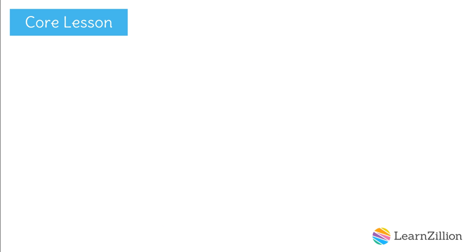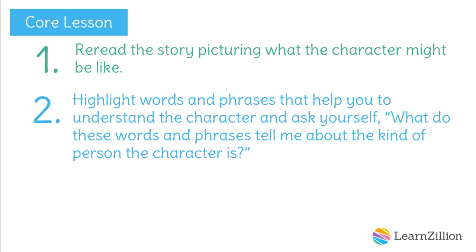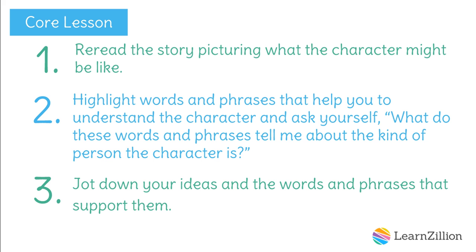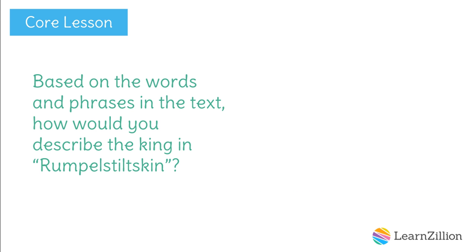Today, we are going to explore the character of the king in Rumpelstiltskin by following three steps. First, we re-read the story, picturing what the character might be like. Second, we highlight words and phrases in the text that help us to understand the character and ask ourselves, what do these words and phrases tell me about the kind of person the character is? Third, we jot down our ideas and the words and phrases that support them. The question we will be answering today is, based on the words and phrases in the text, how would you describe the king in Rumpelstiltskin?